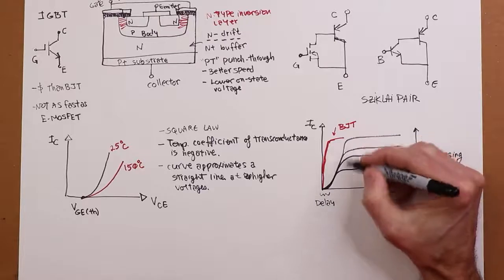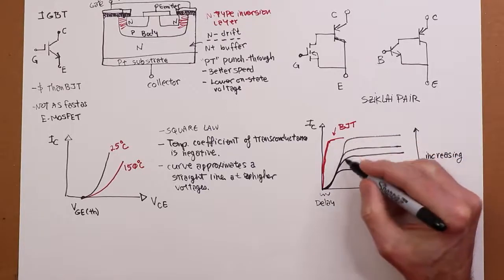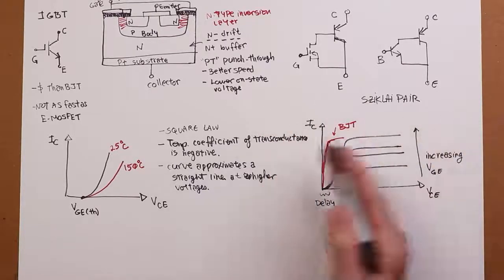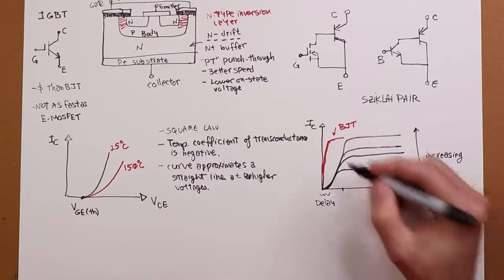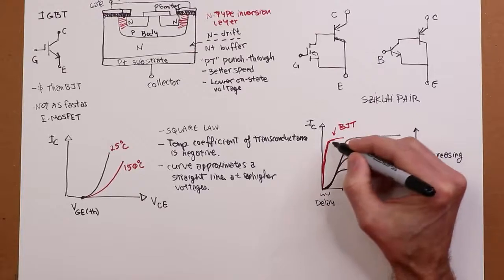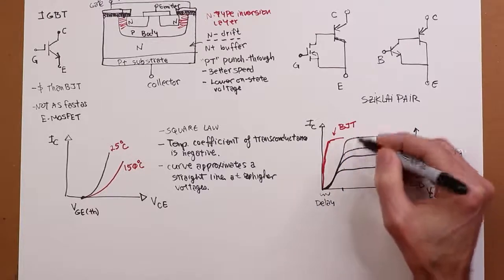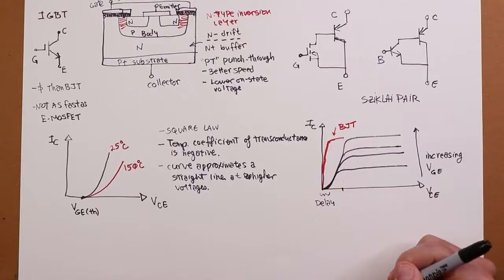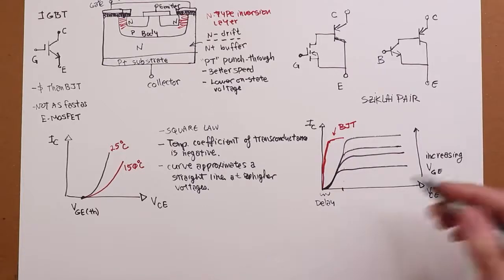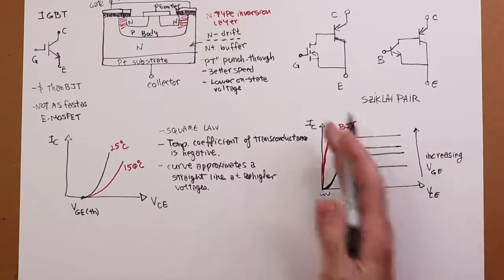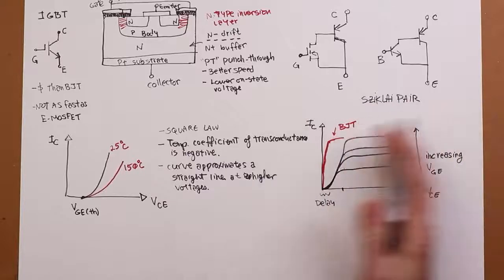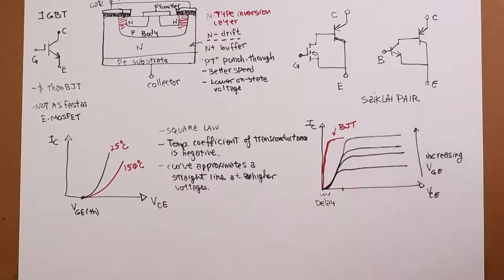And again, this is because of the turn-on required for the MOS part of this. The other thing is this knee. The knee out here before where it really starts to flatten out is going to be considerably higher than it is for a BJT. For a BJT, this could be a few tenths of a volt where this thing flattens out. For this, it could be a few volts, five volts, whatever it works out to for that particular effect. But it's going to be a higher thing. But once we get rolling, once we get above that, we have this nice sort of constant current sort of affair. And we get the expected sort of performance.